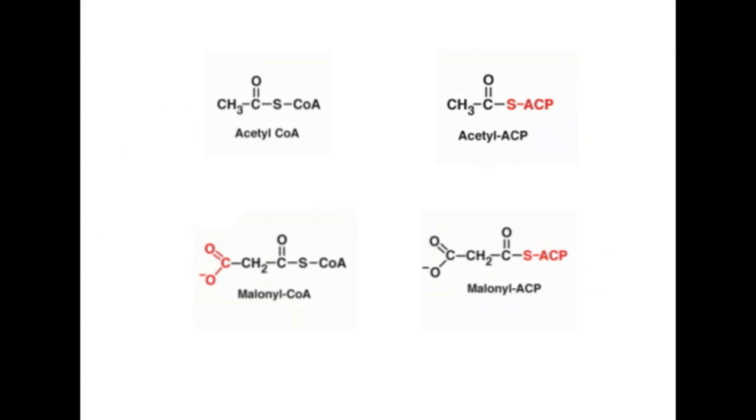So back to the four main players. Acetyl-CoA can either be converted into acetyl-ACP or malonyl-CoA, and then malonyl-CoA is converted into malonyl-ACP. Here's a closer look at the reactions that form these beginning molecules.